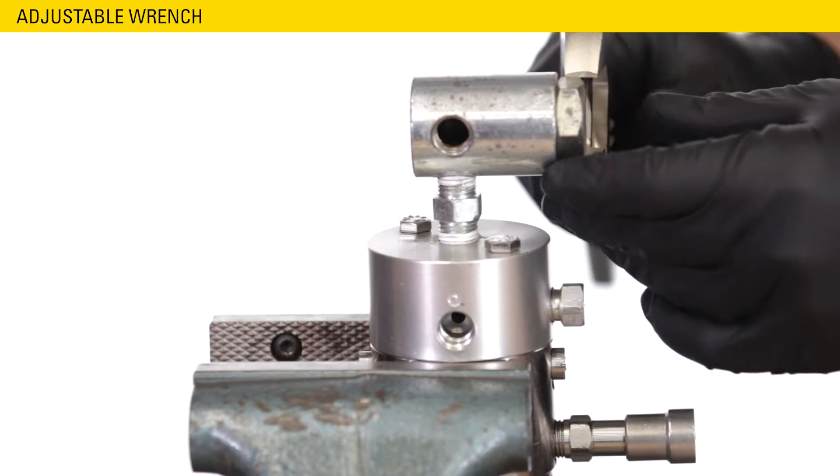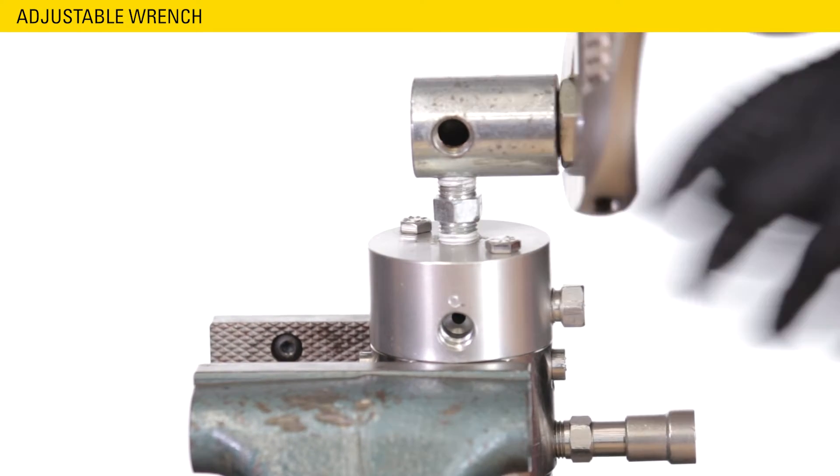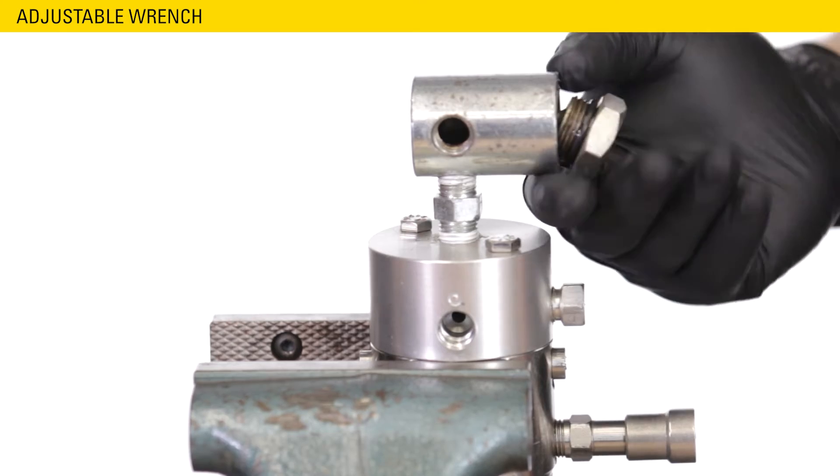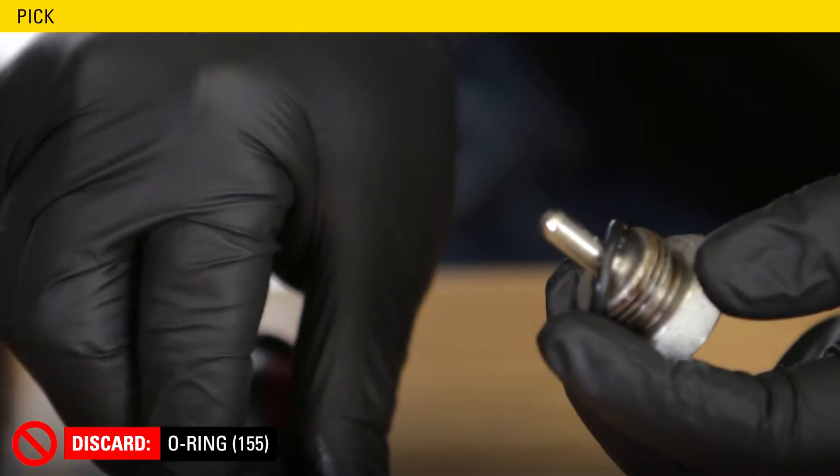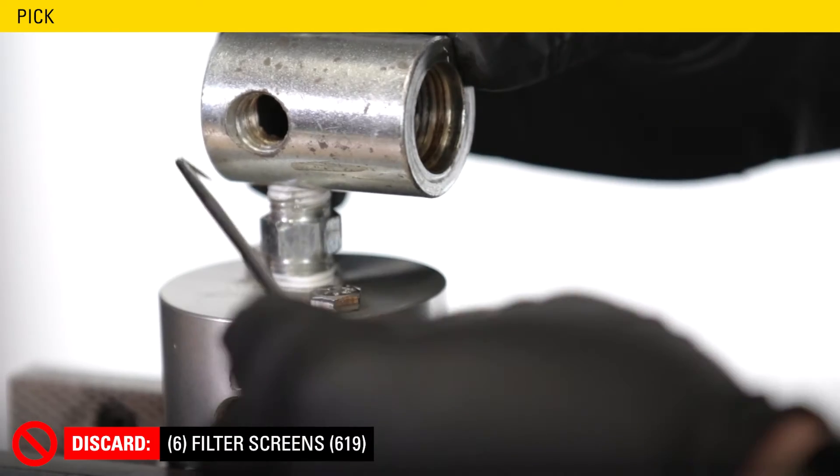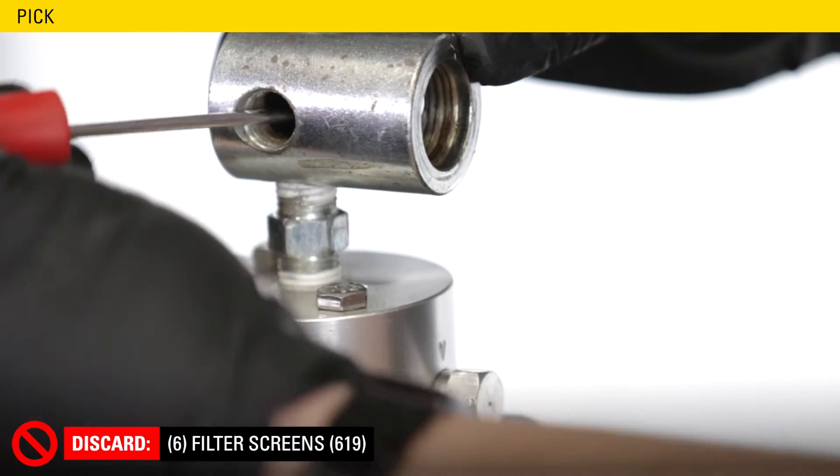First, remove the filter cap using an adjustable wrench. Use a pick to remove and discard the O-ring. Then discard the six filter screens inside the filter body.